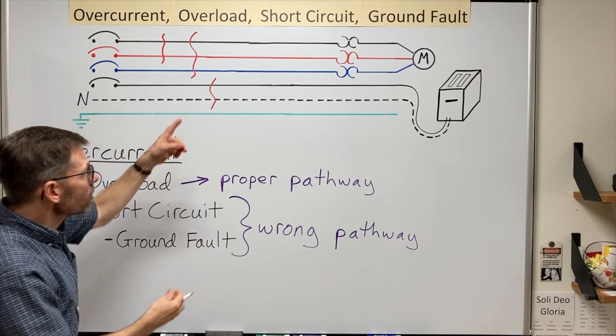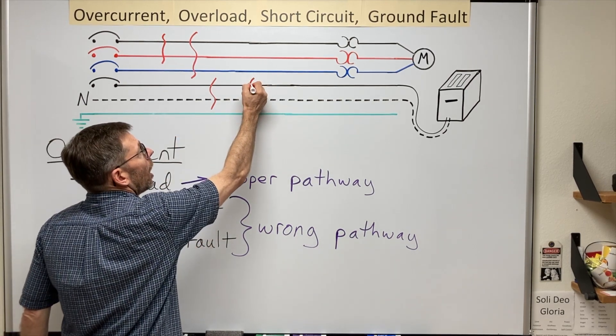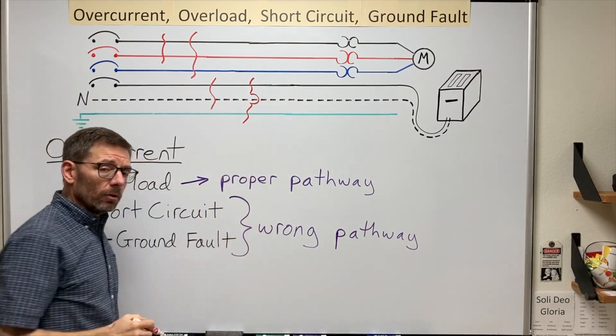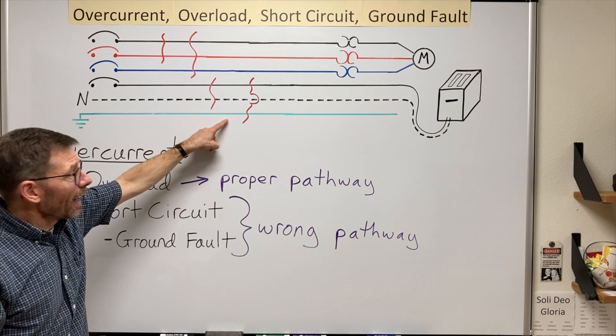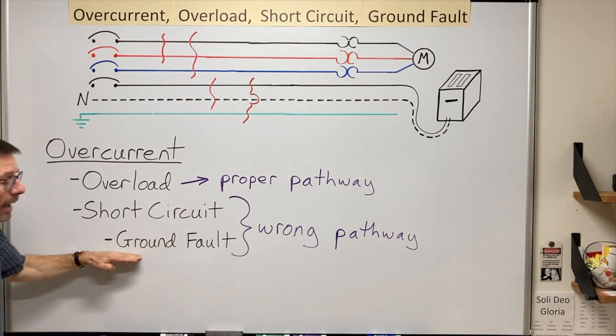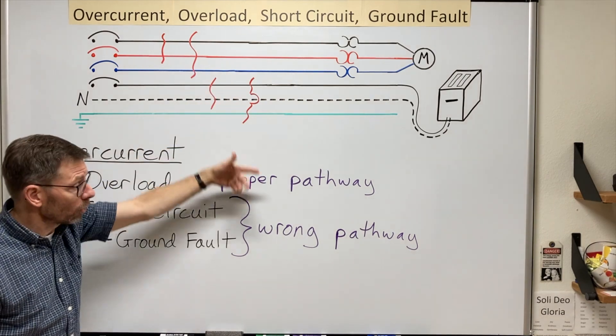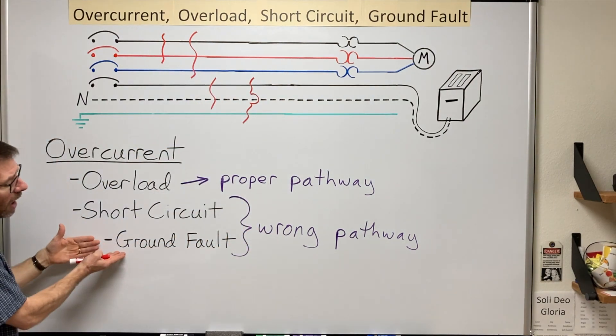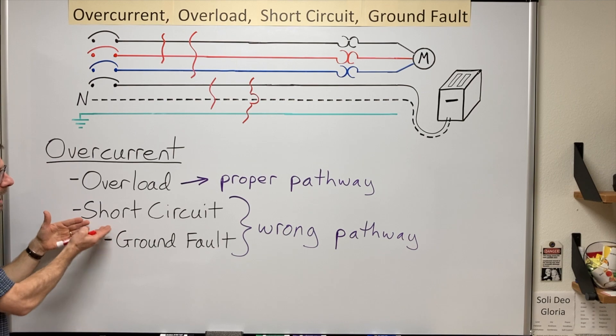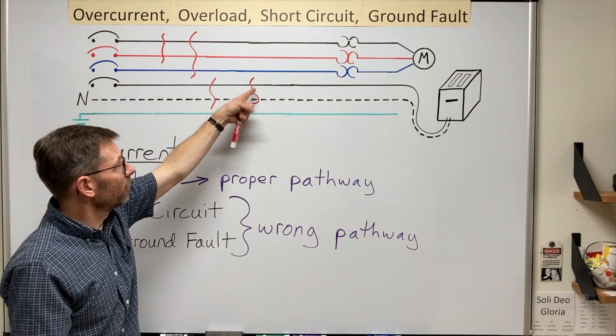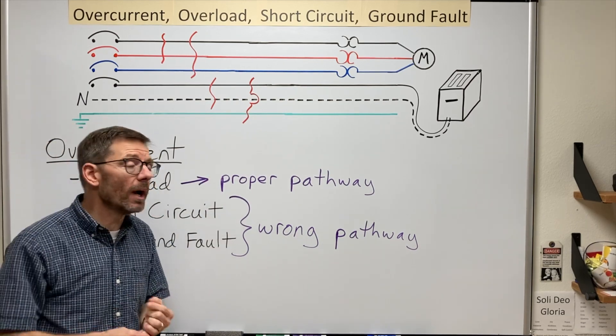Now, we could also have a hot to the ground. Now, whenever the ground is involved, we call it a ground fault. So it's still a short circuit, still taking the wrong pathway. So you'll often see ground fault as a subcategory of short circuit. And a lot of current can flow there as well. We want that device to open right away.